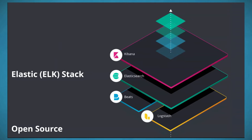Beats are lightweight data shippers that send data into Elasticsearch — these are the lightweight agents we'll install on our syslog server. Logstash is a server-side data processing pipeline. Both Beats and Logstash form the ingest layer. Elasticsearch is a distributed RESTful search and analytics engine that serves as your data store. Kibana is the visualization layer, where you can build dashboards to understand what's happening with your data.